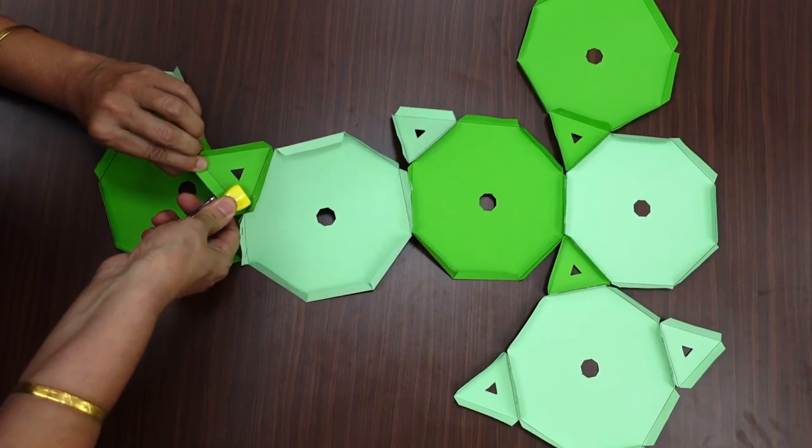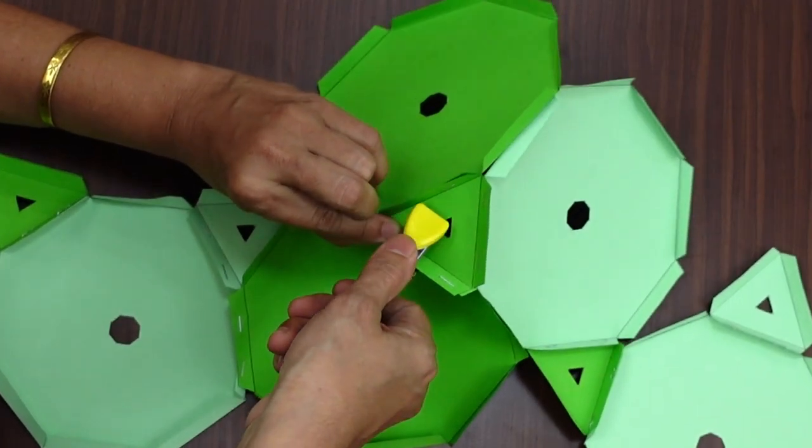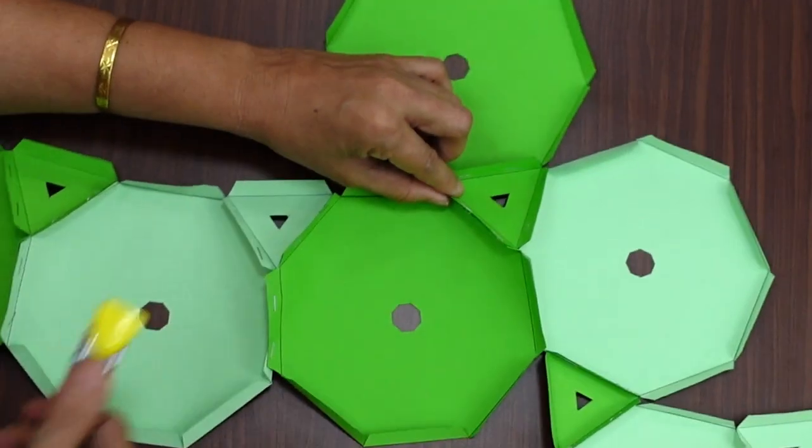Connect the flap on the paper which has star to the star, and connect the flap which has a hash to the hash.